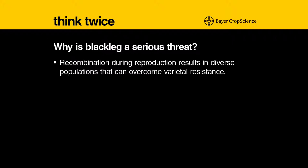which results in evolving races — thousands of races — which can have increased virulence over current existing races and which have the ability to overcome resistance in our resistant varieties. Secondly, the fungus itself survives on stubble.